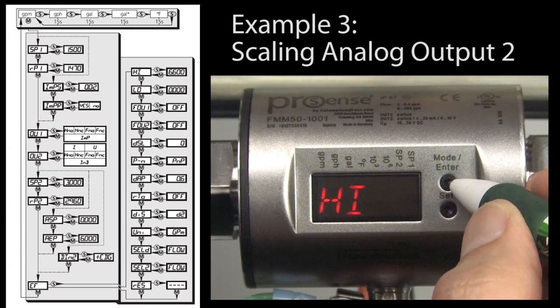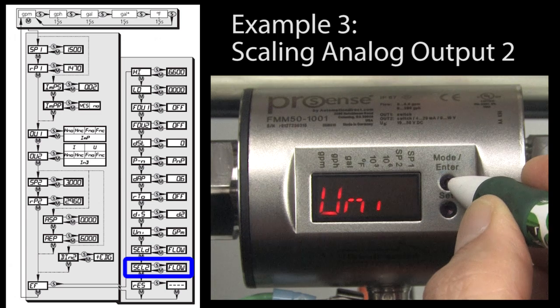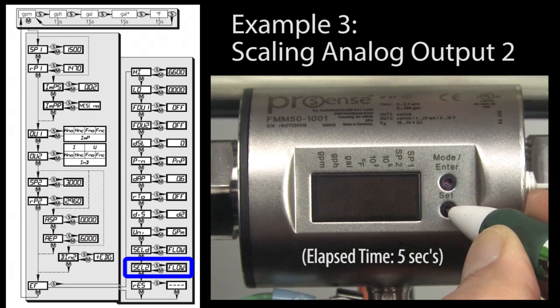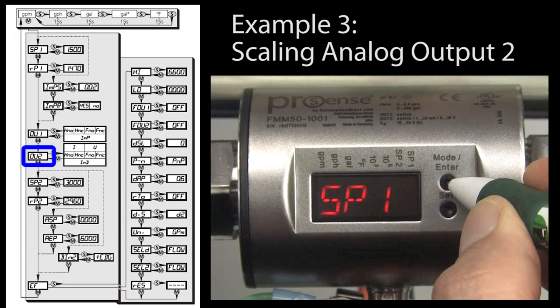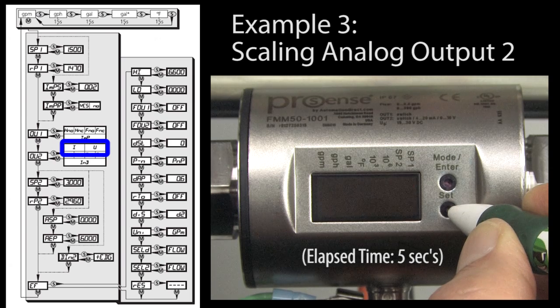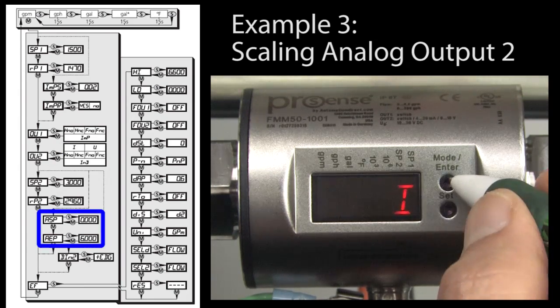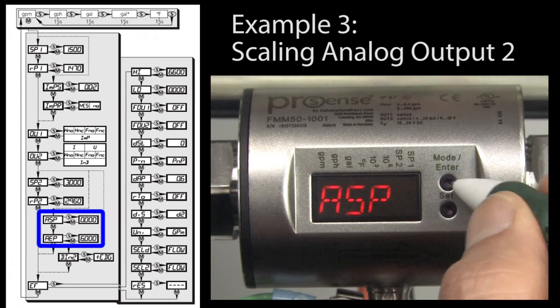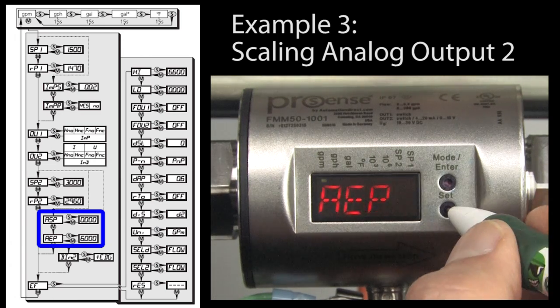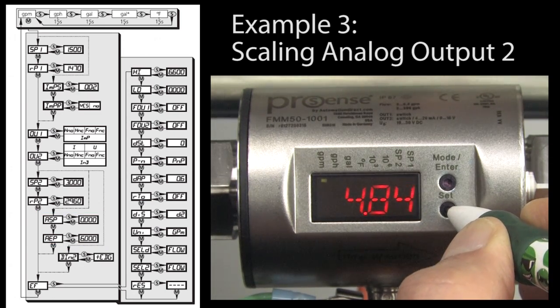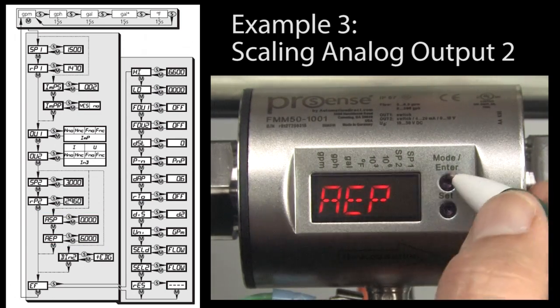To do that scaling, make sure you have the function you want selected in SEL 2 – Temperature or Flow. Then under Output 2, select if you want current or voltage output. Once you do that, these options become available – ASP is the minimum output value and AEP is the maximum output value. Well, that's all there is to scaling your analog outputs.